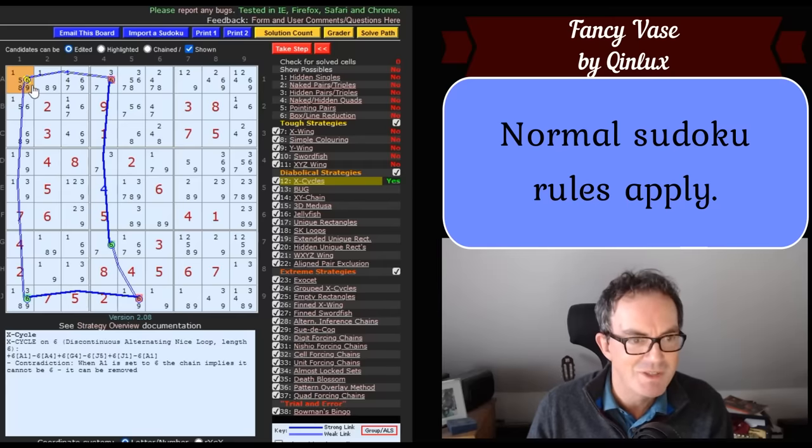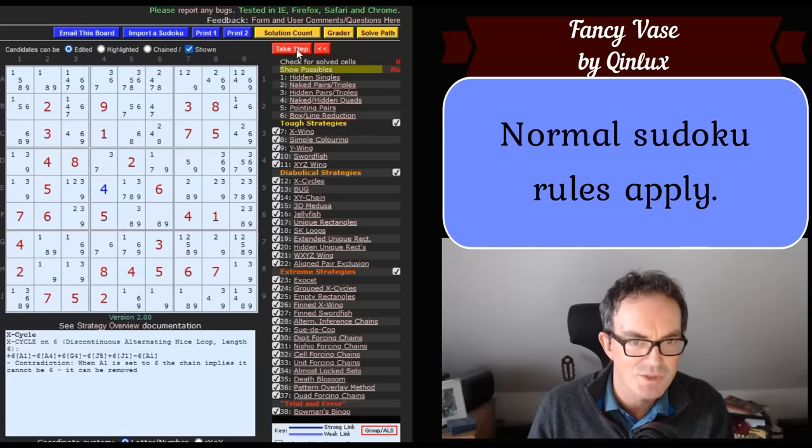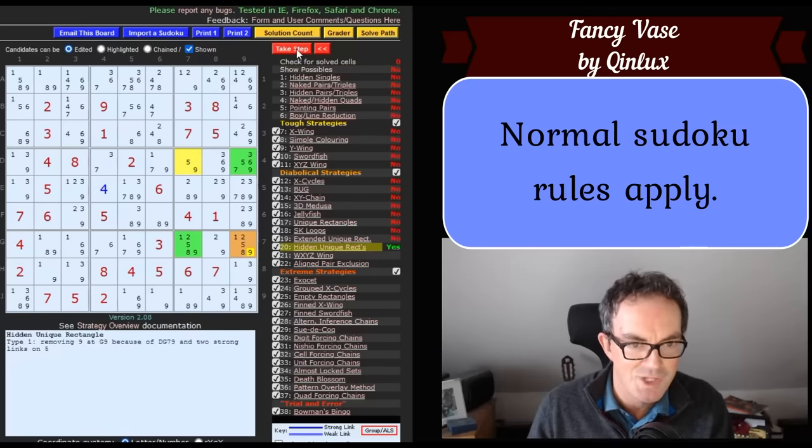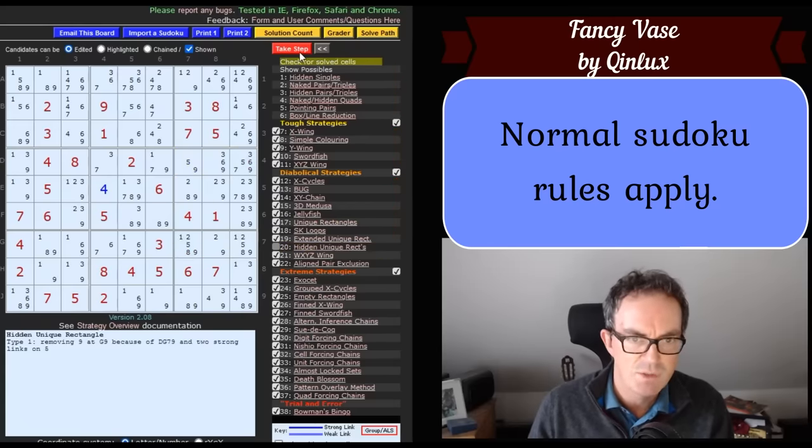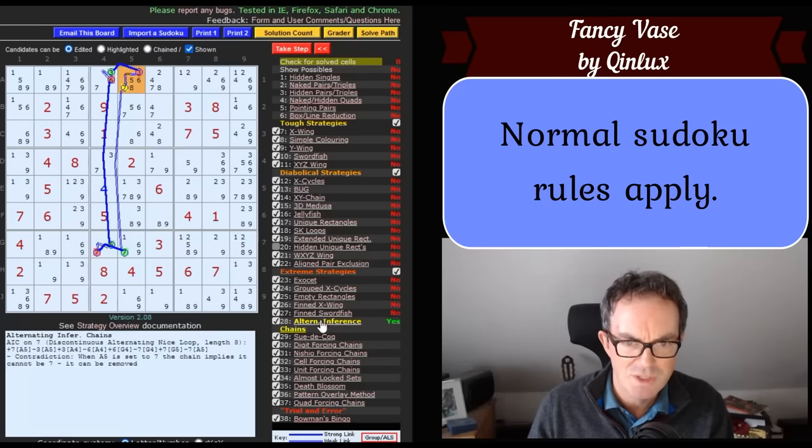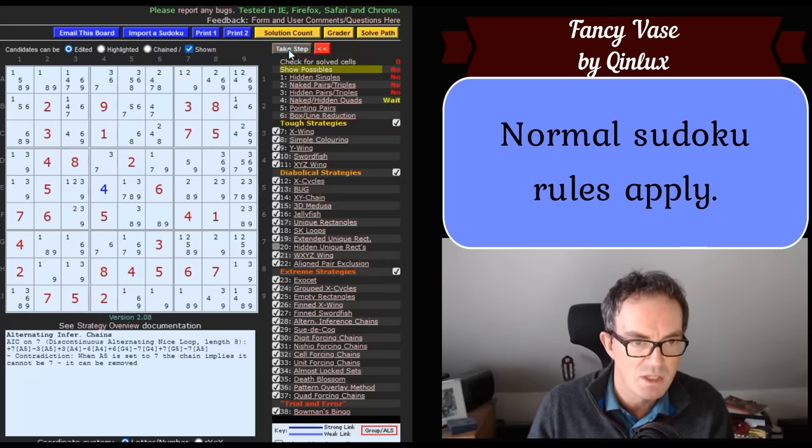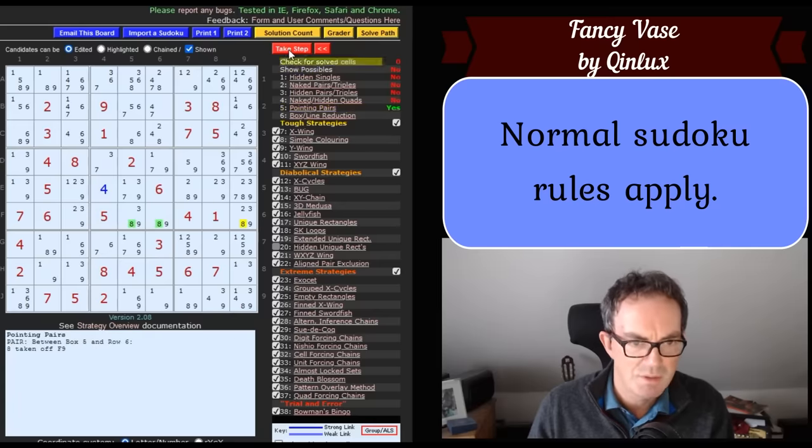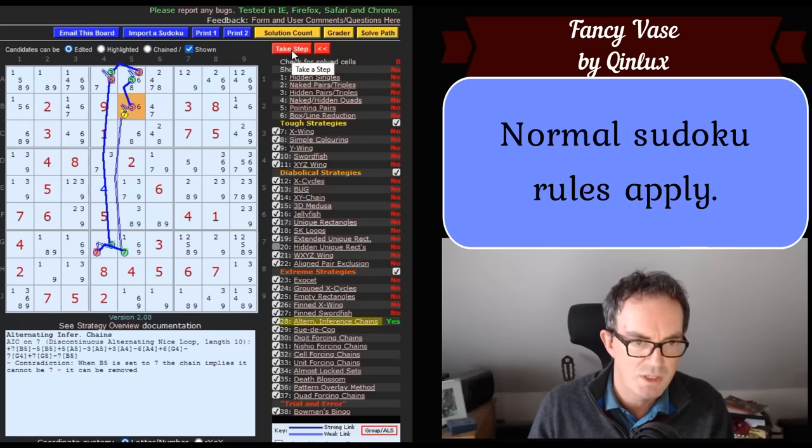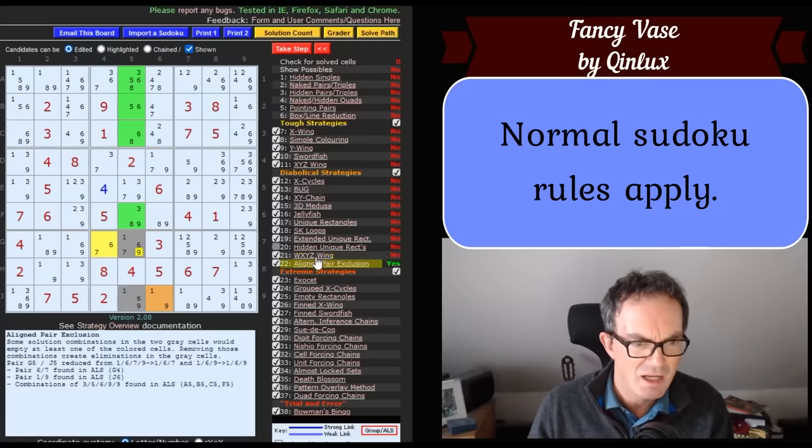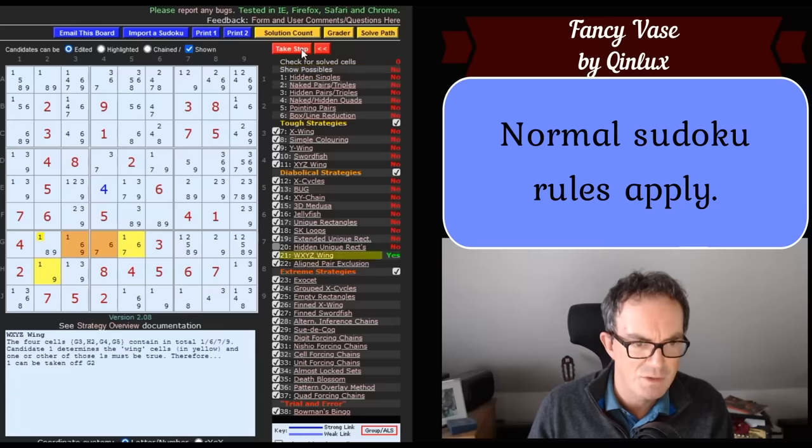And now we can click through the solve path and see what the computer tells us. So remember the way we broke into it was working out this one, nine trick over here. What's the computer doing here? An X cycle. Computer thinks the next step is to remove a six from row one, column one. That's just bonkers. That is not a human move. Hidden unique rectangles. This is some uniqueness trick. We should turn that off because that's using the fact that the machine only has one solution.